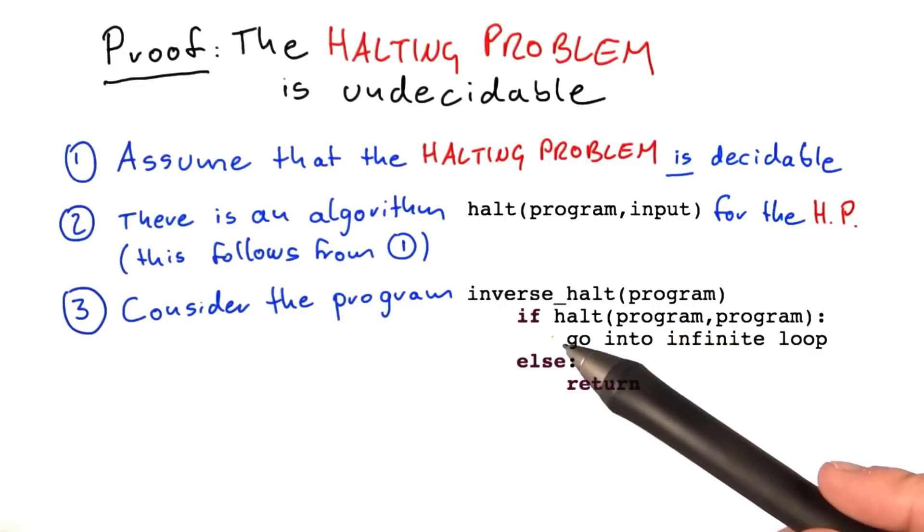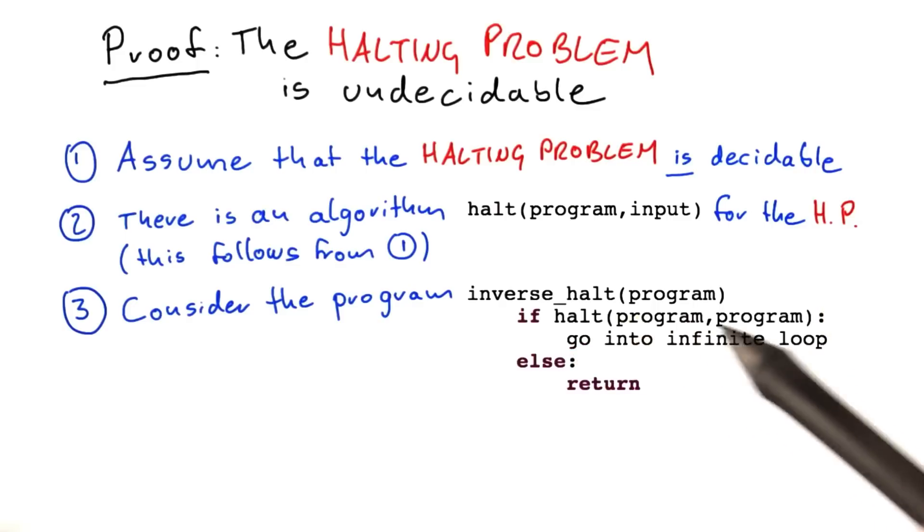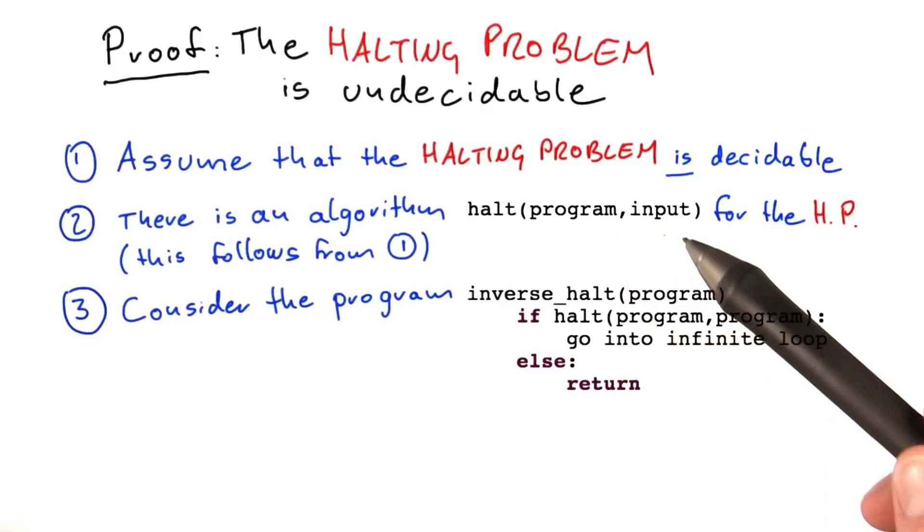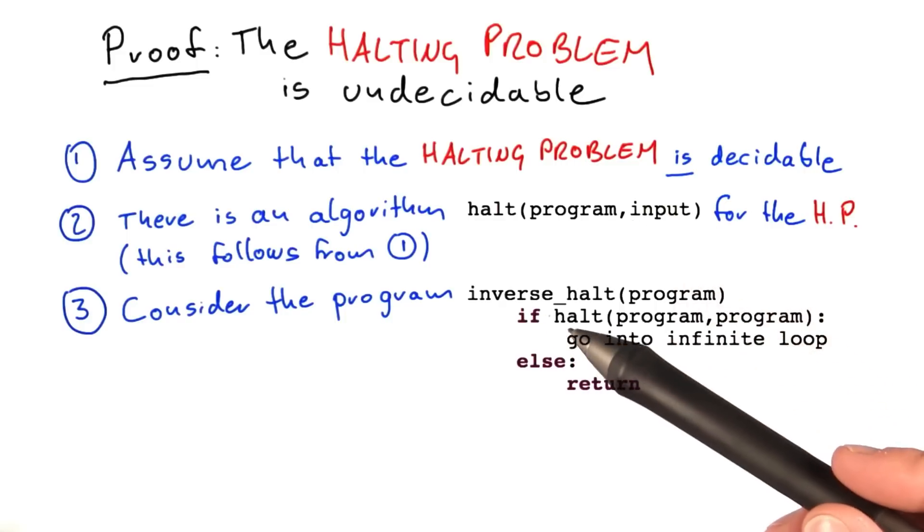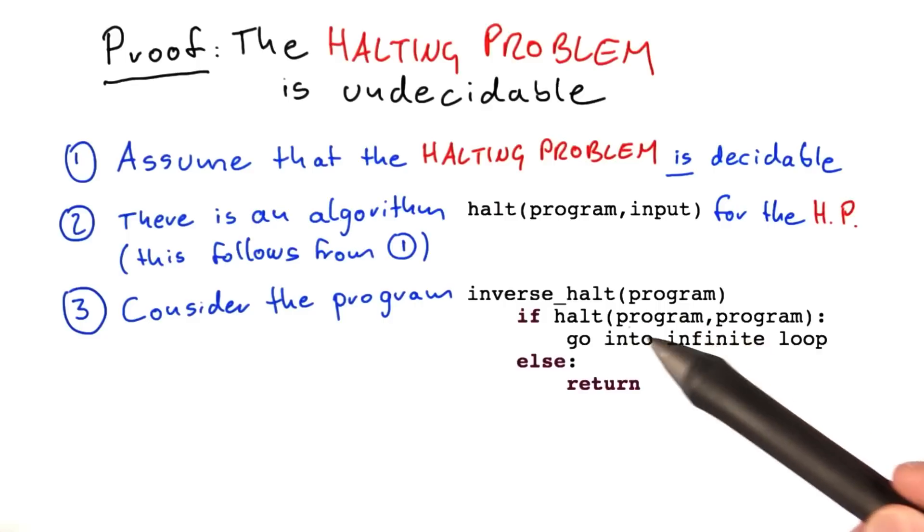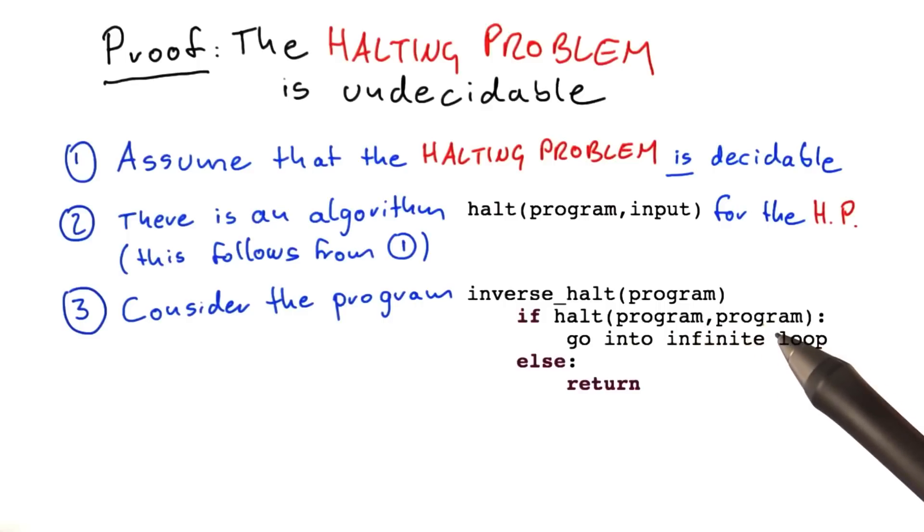And then it calls the halt algorithm with two inputs. So the first input is again the program, just as in halt. But it also gives the program's source code itself as an input to halt. So it's basically the question of what happens if I give a program its own program code as an input.